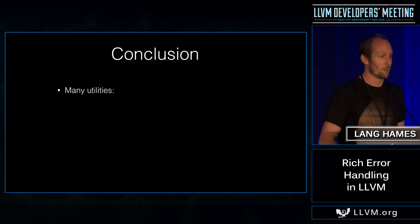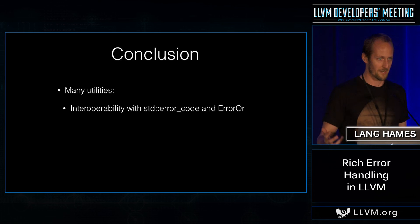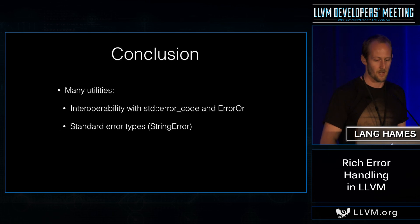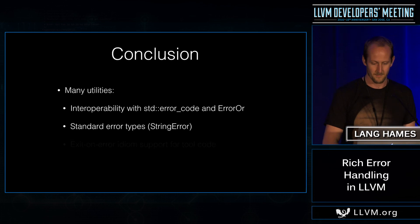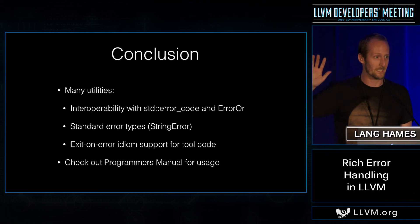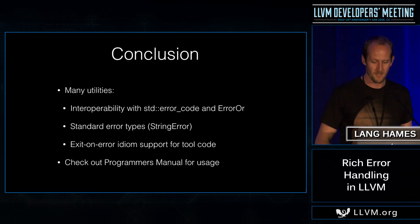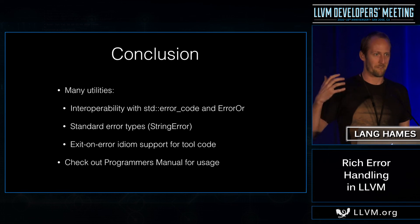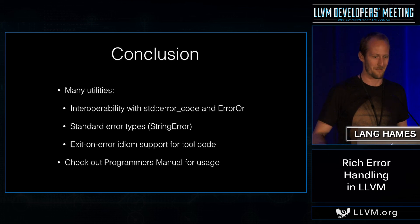Quick summary: there are a bunch of utilities in the error.h header you can use with this new API. There's interoperability with std::error_code and ErrorOr for converting existing APIs, making it easy to do surgical updates. There are standard types — if you only need a string error, you can use the StringError type. If you're writing tool code and don't care about propagating errors up, you can use the exit-on-error idiom to bail out immediately and log the message to the terminal. This is the place to go for failing code. Don't use std::error_code anymore — use LLVM Error, and check out the programmer's manual for all the details.